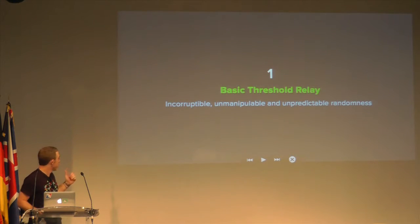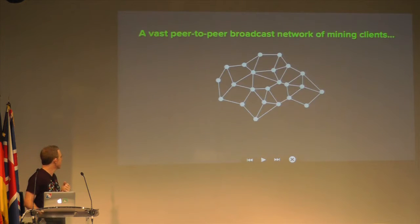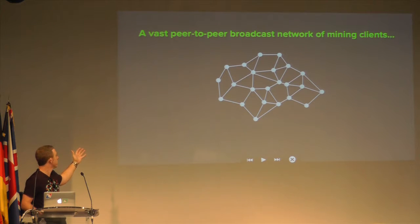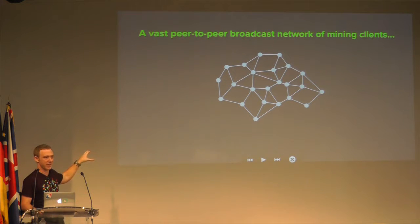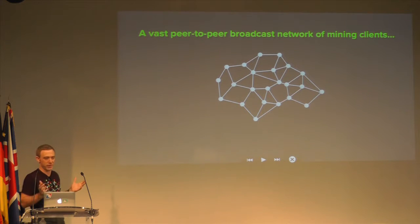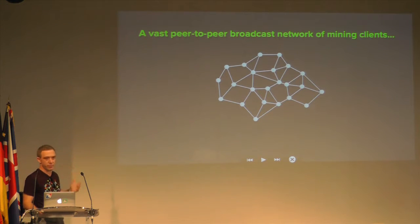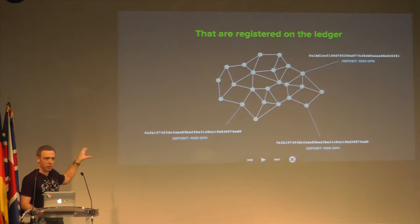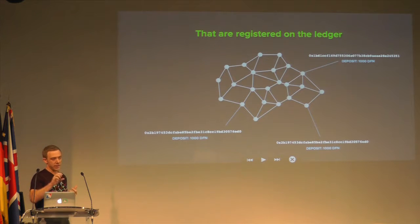Basic threshold relay produces this — it's like a random beacon — it produces incorruptible, unmanipulable, unpredictable randomness. Our model: we have a peer-to-peer broadcast network of mining clients. In reality, a three-dimensional diagram would be far more realistic because processes make random connections to each other, and that's how you get the broadcast guarantees — that's what happens in Ethereum today. It's vast; you can have potentially millions of processes in this broadcast network.